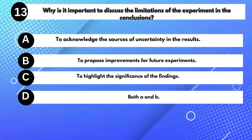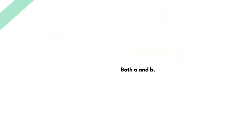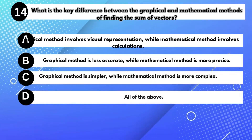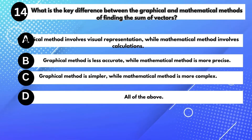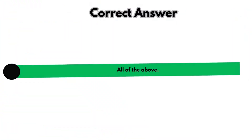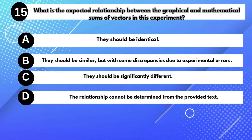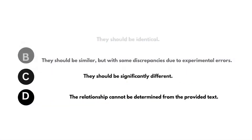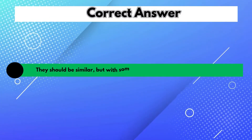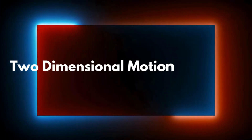Why is it important to discuss the limitations of the experiment in the conclusions? Answer D: Both A and B. What is the key difference between the graphical and mathematical methods of finding the sum of vectors? Answer D: All of the above. What is the expected relationship between the graphical and mathematical sums of vectors? Answer B: They should be similar, but with some discrepancy.